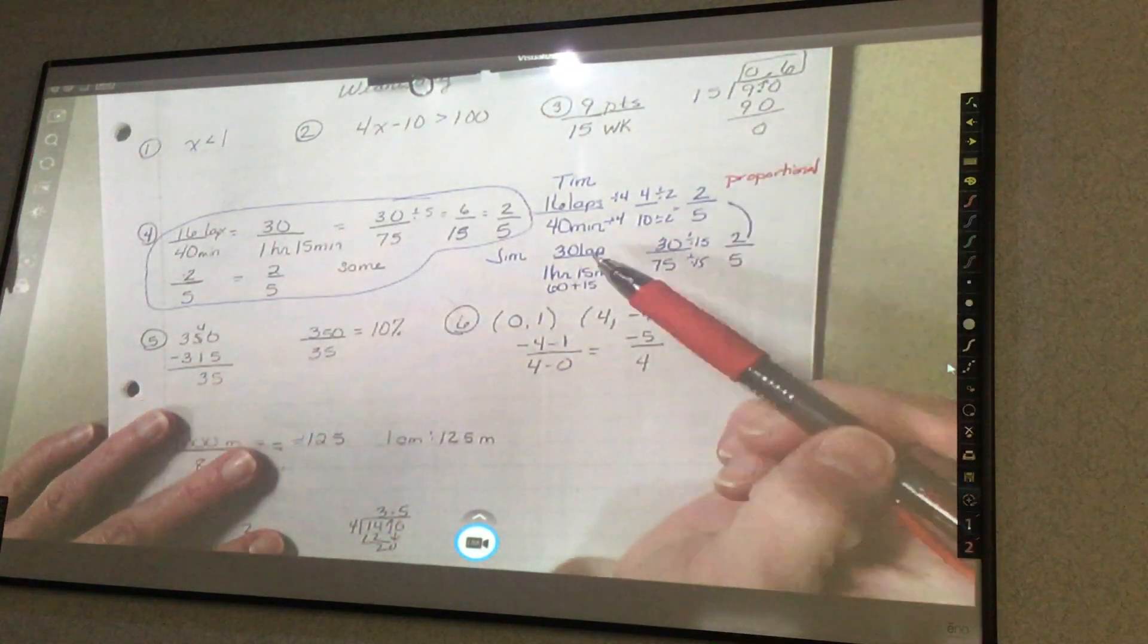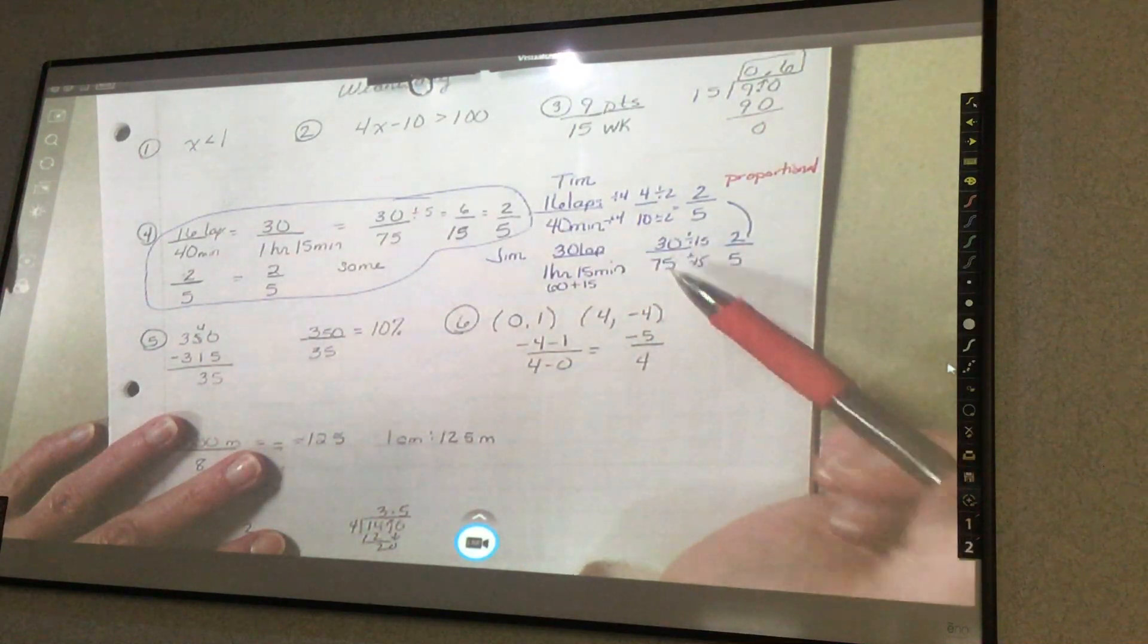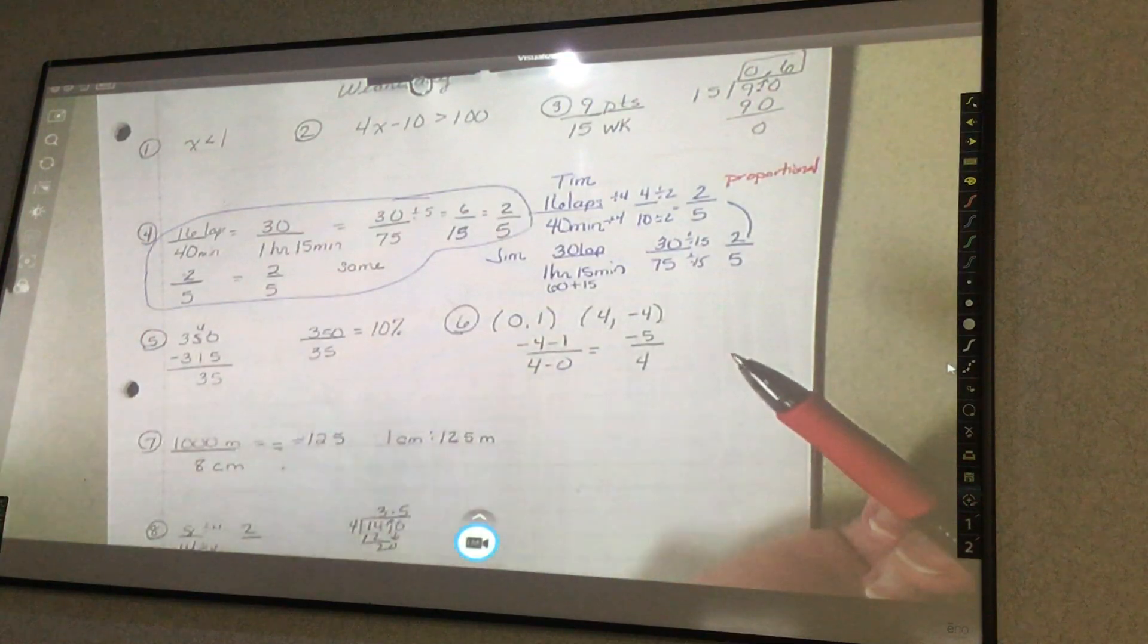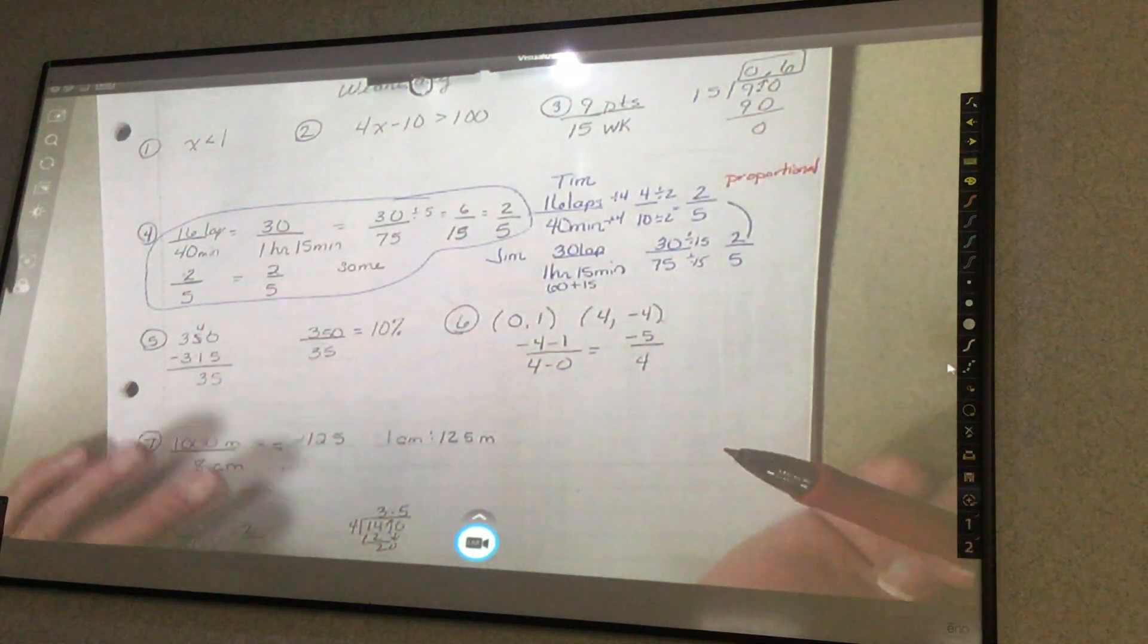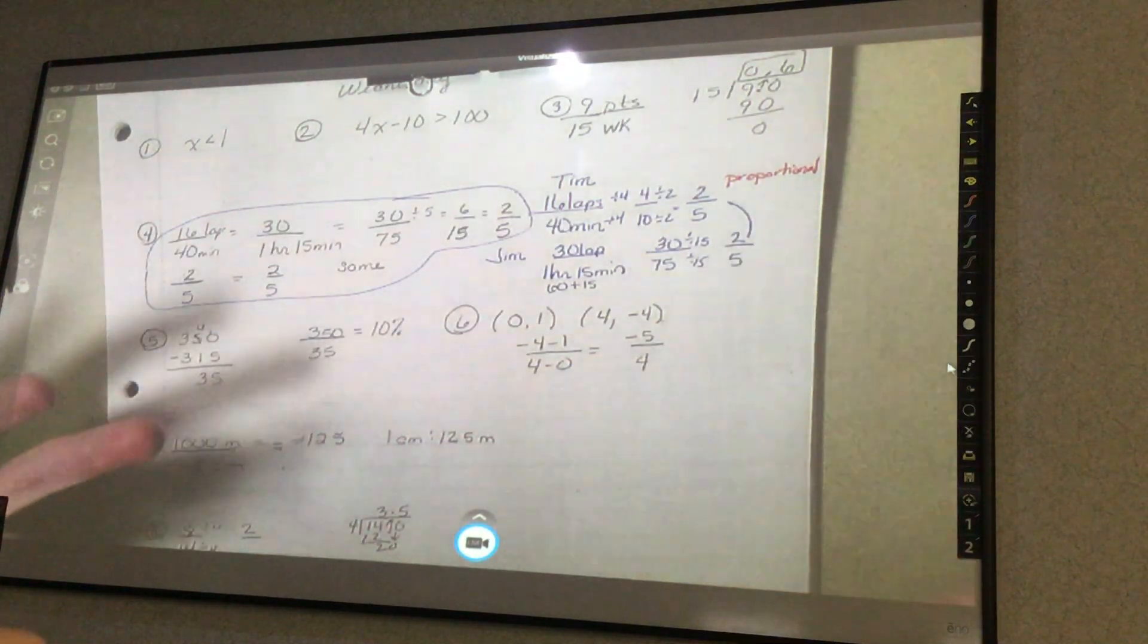I could have also done it in my calculator, 16 divided by 40 and 30 divided by 75 and gotten a decimal point. Zero point, what is it? Zero point four, and then you're comparing the decimals. Since you were using a calculator now, I might have done it that way.